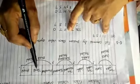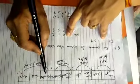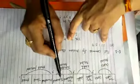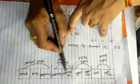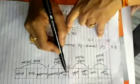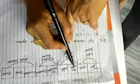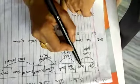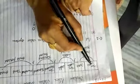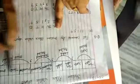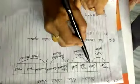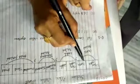The places are: ones place, tens place, hundreds place, thousands, ten thousands, lakh, ten lakh, crore, ten crore. These are all the places.